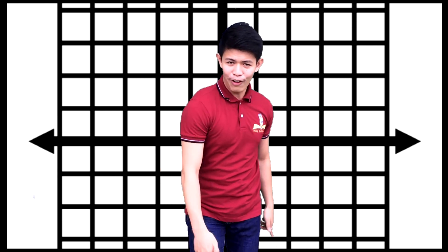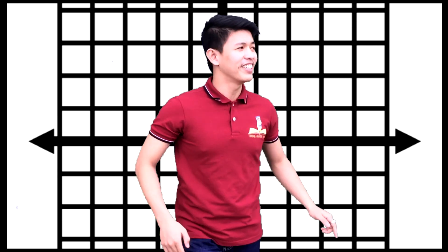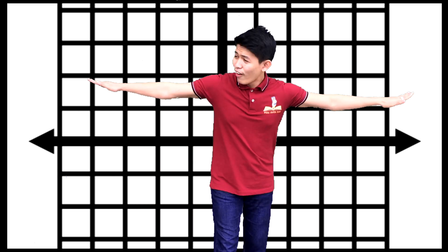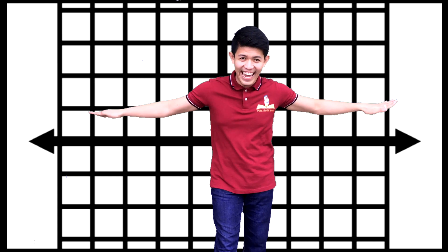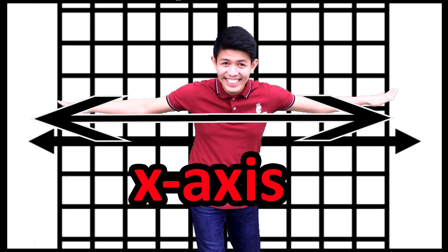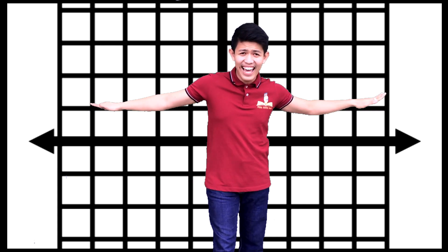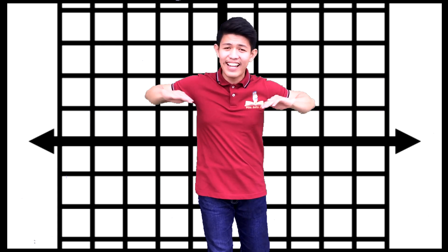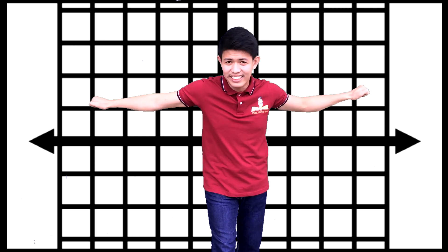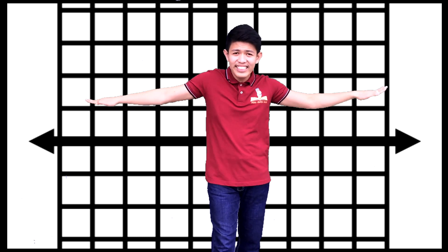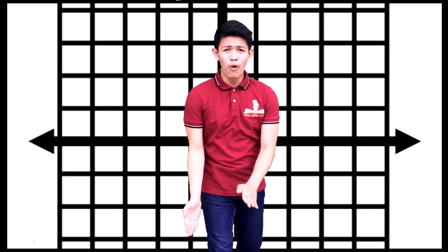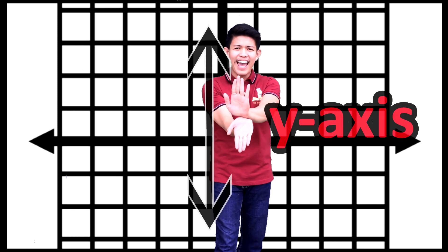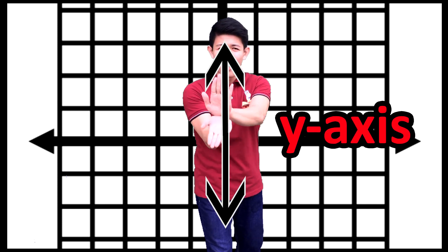X-axis. This horizontal line is what we call the X-axis. While the vertical line is what we call the Y-axis.